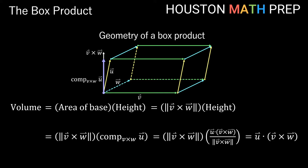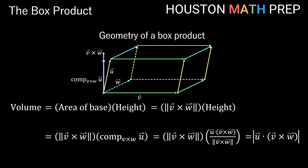There is one small problem that might occur. Depending on the orientation and order of the three vectors, it's possible to get a negative answer, because this is a dot product and dot products can be negative. If we just want to find the box product, a negative answer is okay. But if we're looking for a physical volume, we need the absolute value of the box product. By the way, this type of box is actually called a parallelepiped.